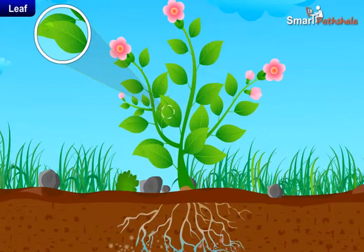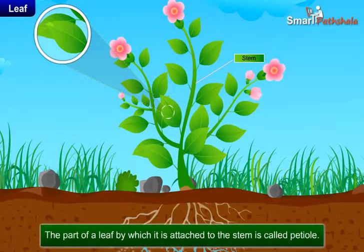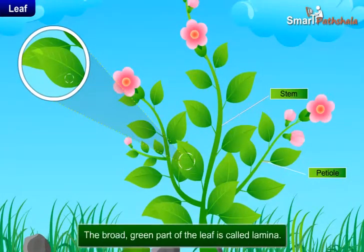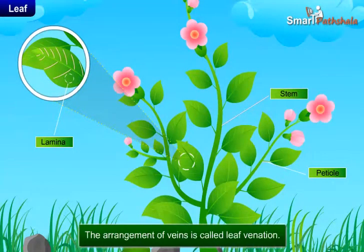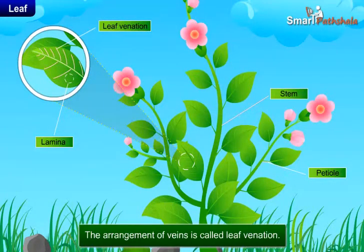Look at the leaves of a plant and how they are attached to the stem. The part of a leaf by which it is attached to the stem is called petiole. The broad green part of the leaf is called lamina. Lamina contains several lines on it. These lines are called veins, and the arrangement of veins is called leaf venation. A thick vein which is present in the middle of the leaf is called midrib.